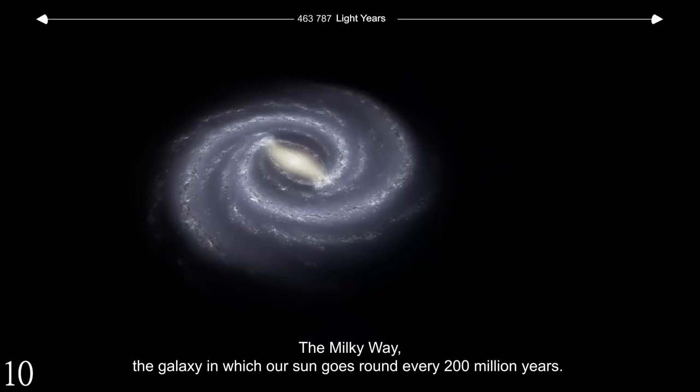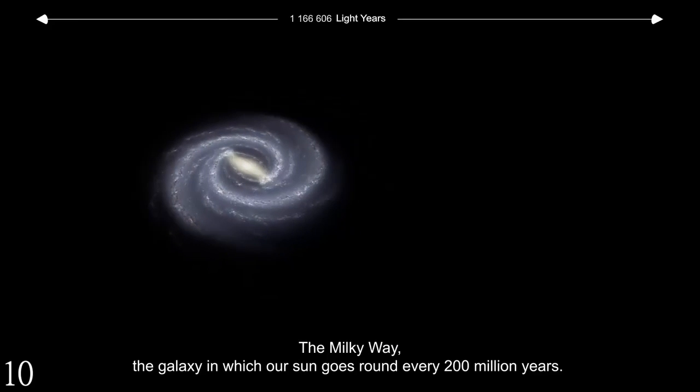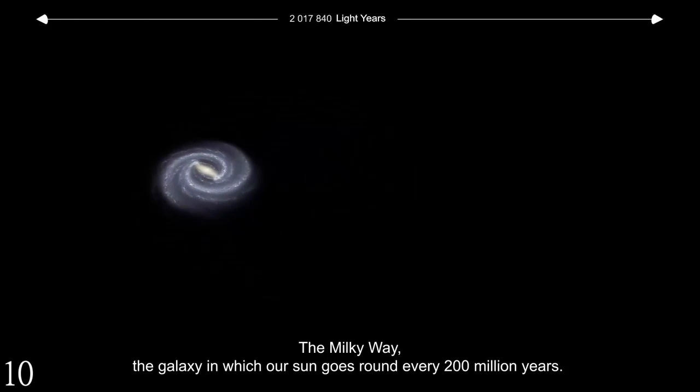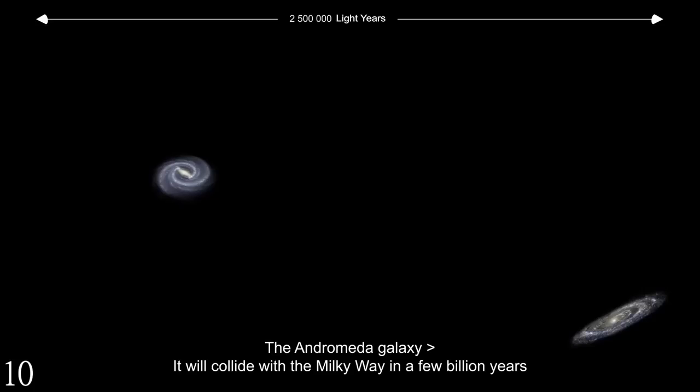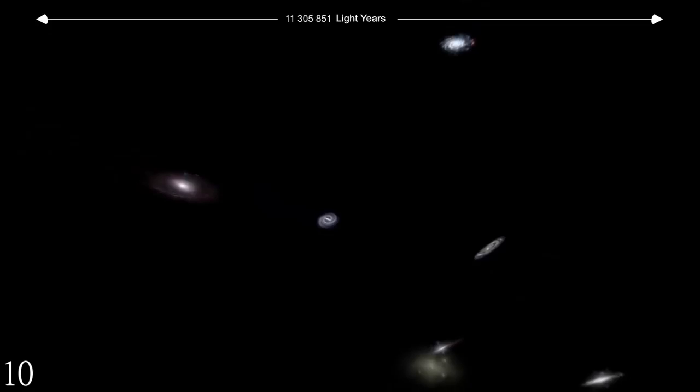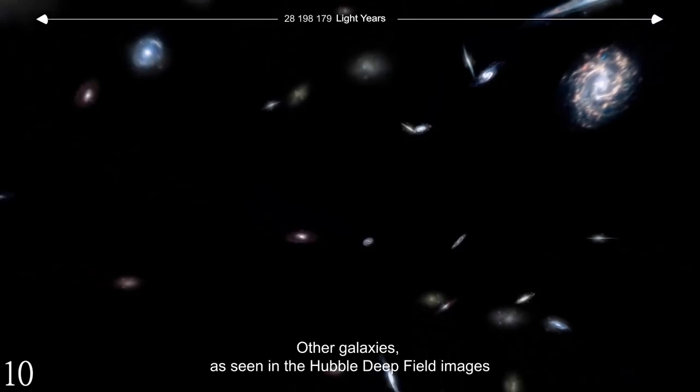It takes our Sun 200 million years to complete an orbit of the Milky Way. And 2.5 million light years away is the Andromeda galaxy, estimated to collide with our own galaxy in a few billion years.